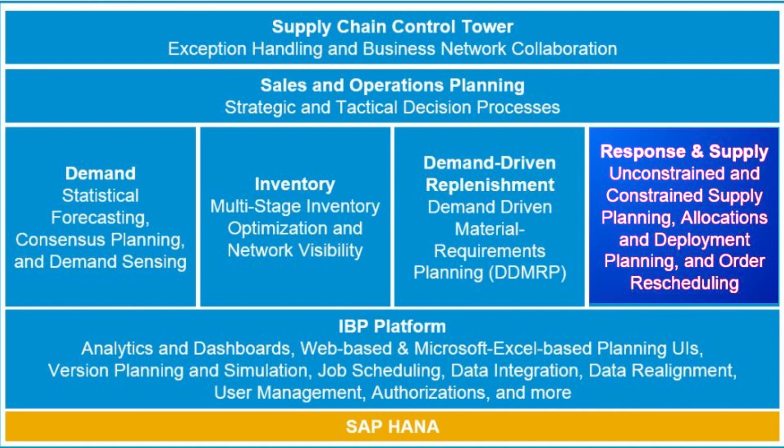That's where order-based planning, available through the response and supply module in SAP IBP, fills the gap. Unlike time series methods, order-based planning focuses on individual demand and supply orders, integrating them directly with ERP systems. This creates a much more precise planning environment. It not only considers the direct relationships between customer demand and supply, but also allows planners to match and confirm orders efficiently. This method is highly effective for short-term execution-driven planning, although it can also be applied to long-term plans, particularly in cases where pegging plays a critical role.